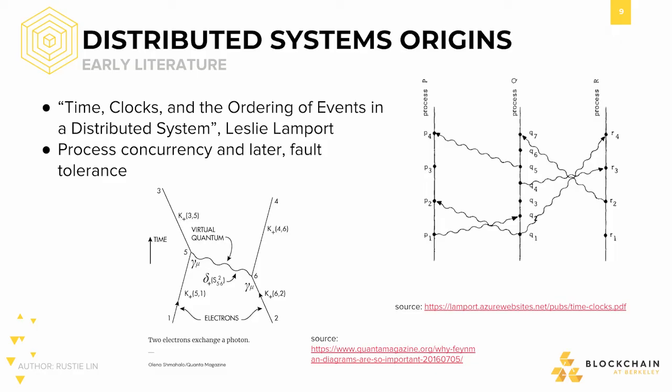For those of you with experience in quantum physics, you may notice the resemblance between Lamport's diagrams and Feynman diagrams, which show the interaction of subatomic particles. Lamport realized that the notion of causality in distributed systems was analogous to that in special relativity. In both, there are no notions of total ordering of events — events may appear to happen at different times to different observers in the case of special relativity, or processes in the case of distributed systems. It's important to recognize that through the efforts of Lamport and other scientists, the formal study of distributed systems began to take shape.